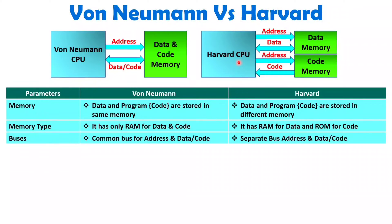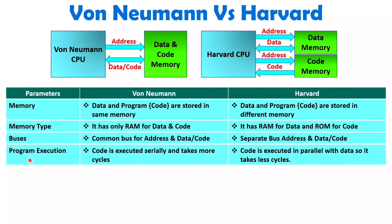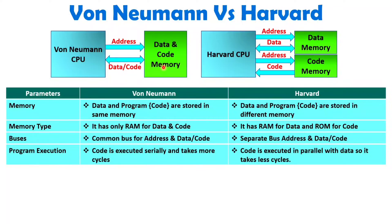When we consider how program execution happens, with Von Neumann architecture, code will get executed serially — you cannot have parallel execution. First you execute code, and if there is a requirement for data, then data will be read and written from the same memory. So execution is serial with Von Neumann.